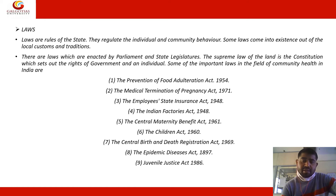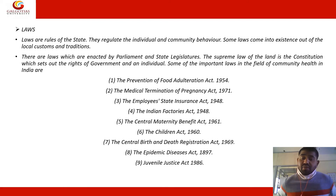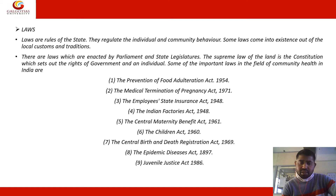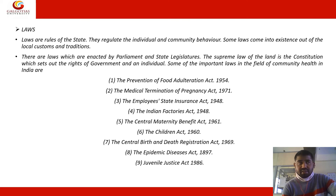Other important community health laws include the Central Maternity Benefit Act 1961, Children Act 1960, Central Birth and Death Registration Act 1969, Epidemic Diseases Act 1897, which came into existence during British rule, and the Juvenile Justice Act 1986.